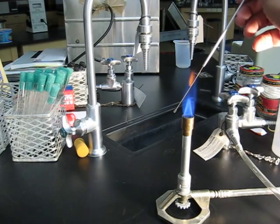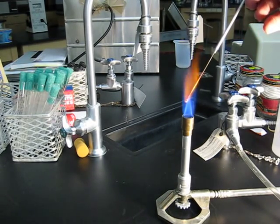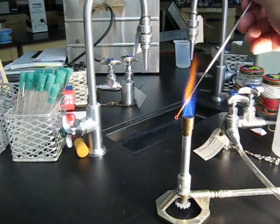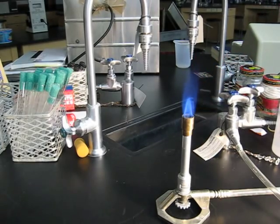The inoculating loop is held in the flame until the entire wire is red hot. This sterilizes the wire and part of the handle. Note that the instrument is held at an angle and not horizontally.